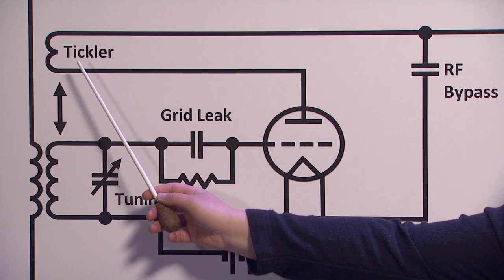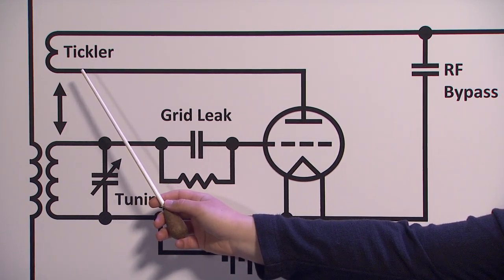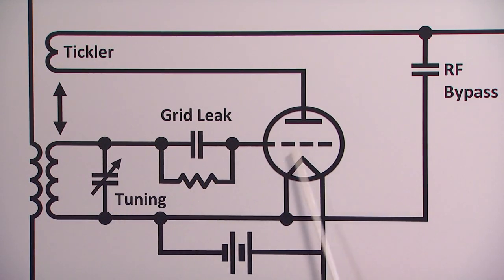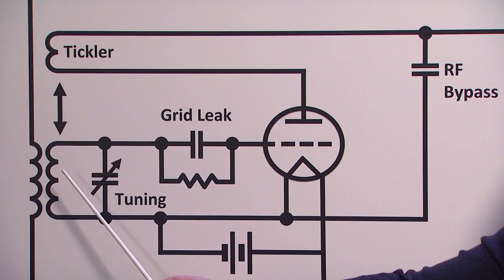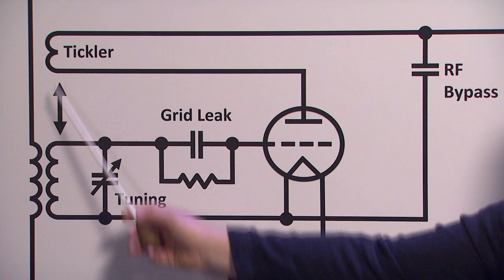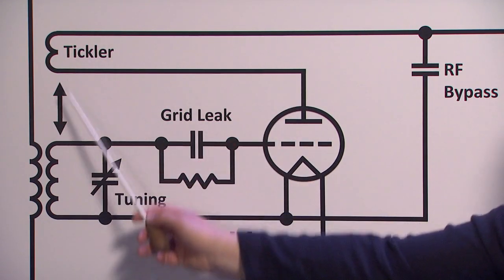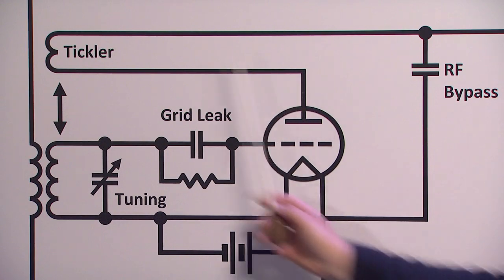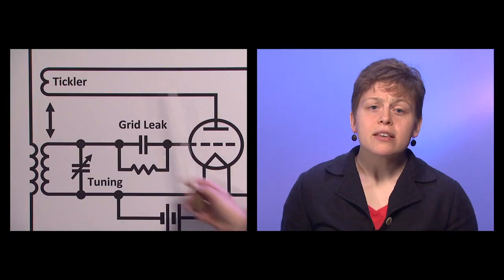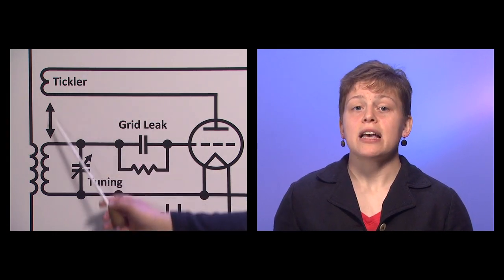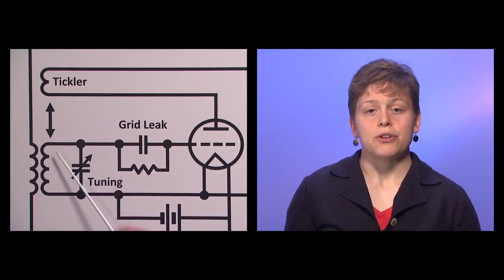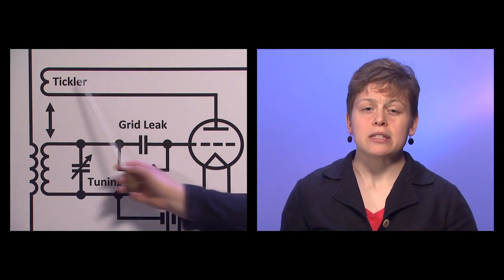That might be enough amplification, but we can do even better using positive feedback. The tickler, located here, takes the amplified radio signal from the vacuum tube and feeds it back into the echo chamber to reinforce new radio waves coming in from the antenna at the same frequency. A frequency strengthened by the echo chamber alone becomes even larger in amplitude after amplification and positive feedback into the same echo chamber. Likewise, any frequencies that did not resonate well in the echo chamber will be diminished further with each circulation back through the loop. This echo chamber, with its output amplified and fed back into itself, is responsible for selecting only one frequency to tune into in the presence of all the other frequencies.